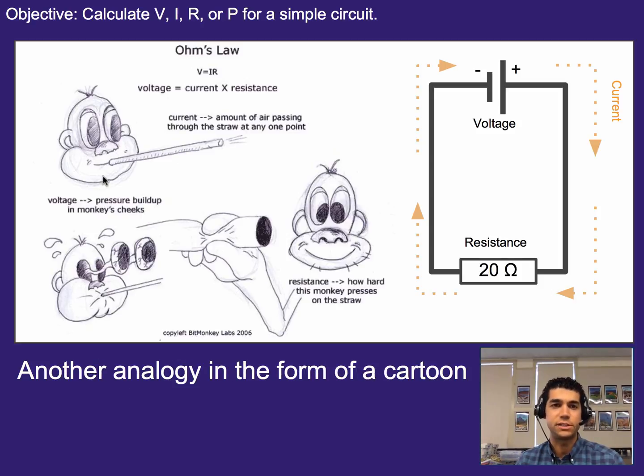Another analogy to help us imagine this is if we imagine a monkey kind of blowing through a straw, voltage would be kind of the pressure buildup in the monkey's cheeks. Current would be how fast the air is passing through the straw. So like how much air is passing through each moment. And then resistance would be like if we imagine somebody else kind of squeezing a little bit on the straw or not. So depending on how much they squeeze the straw, it would provide more resistance. And therefore it would be harder to kind of build up the pressure to blow air through.